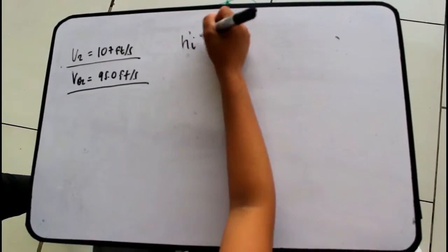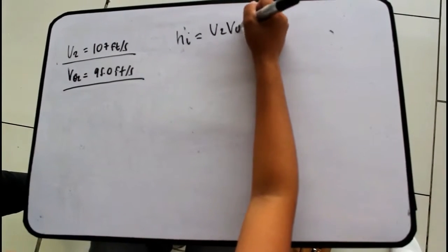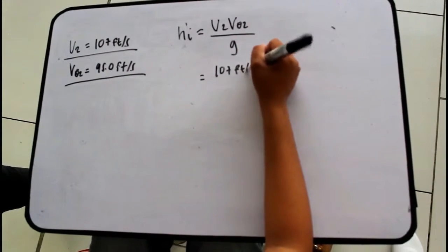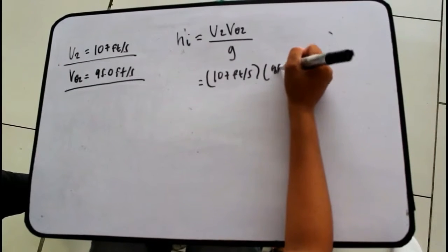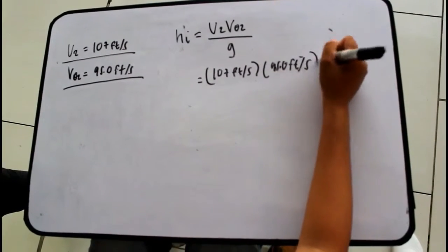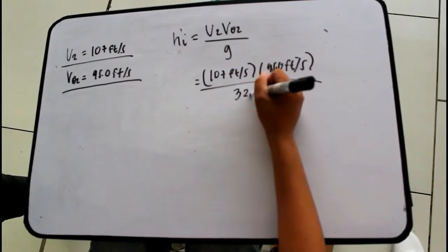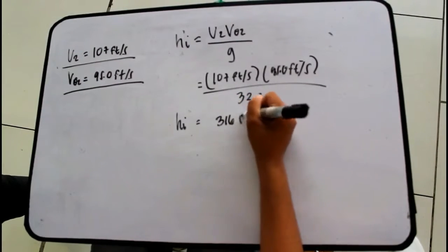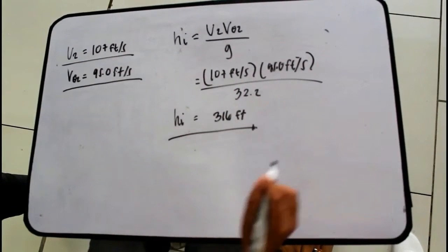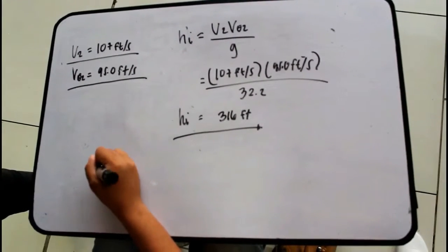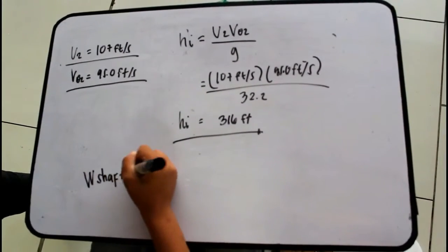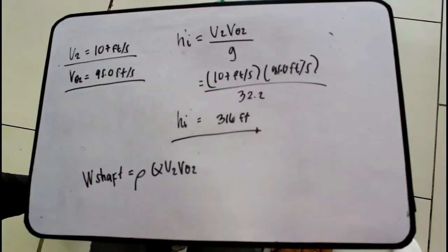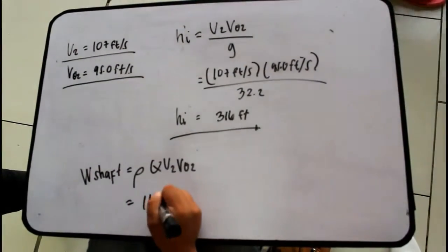Since U2 equals 107 feet per second and V-theta-2 equals 95.0 feet per second, we use the formula Hi equals U2 times V-theta-2 over g, which equals 107 times 95.0 over 32.2, giving Hi equals 316 feet. We also solve for W-shaft, which equals density times Q times U2 times V-theta-2, giving W-shaft equals 112 hp.